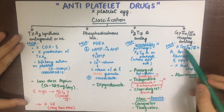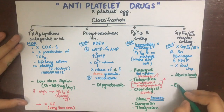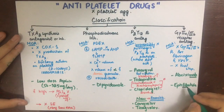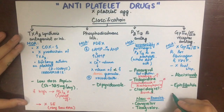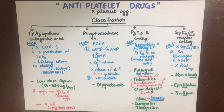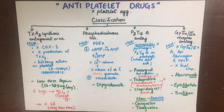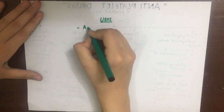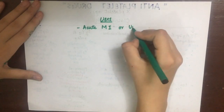GP2b3a receptor antagonists include abciximab, eptifibatide, and tirofiban. The '-mab' suffix in abciximab indicates it is a monoclonal antibody against the GP2b3a receptor. The '-fib' in eptifibatide and tirofiban indicates they are fibrinogen antagonists.